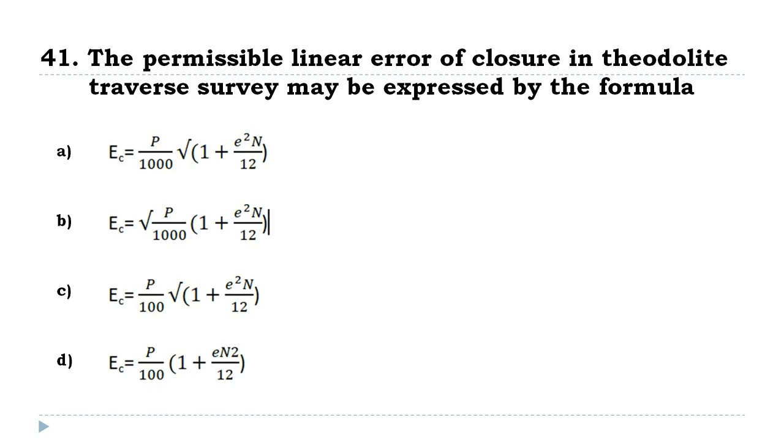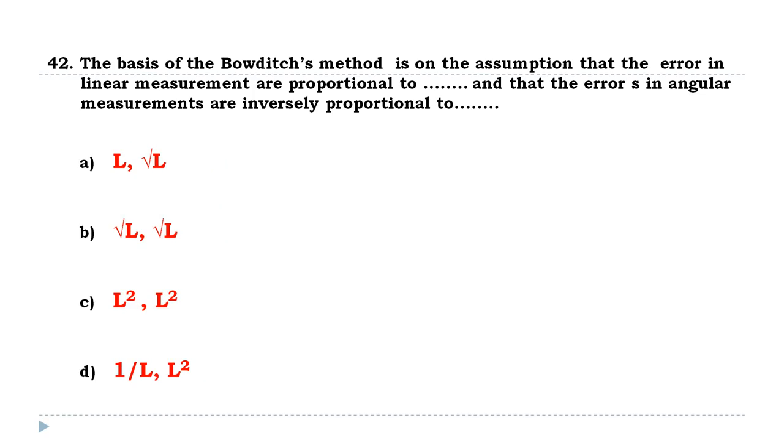The basis of the Bowditch's method is on the assumption that the error in linear measurements are proportional to root L and that the errors in angular measurements are inversely proportional to root L.